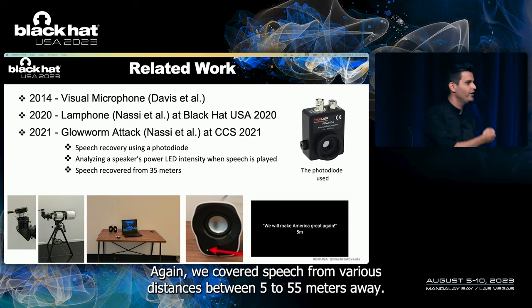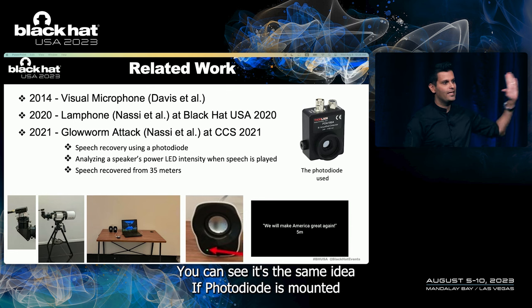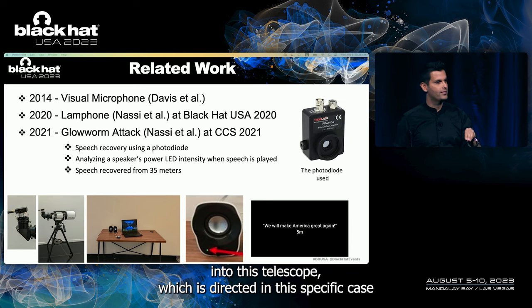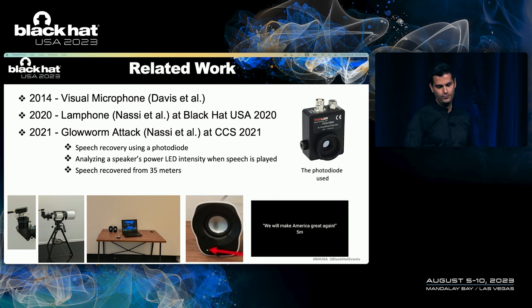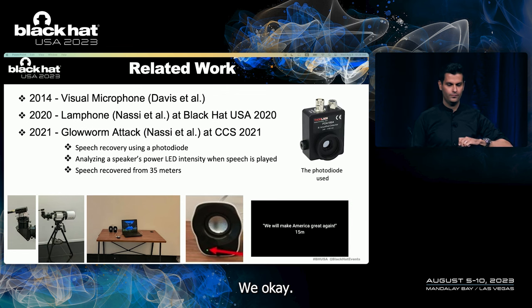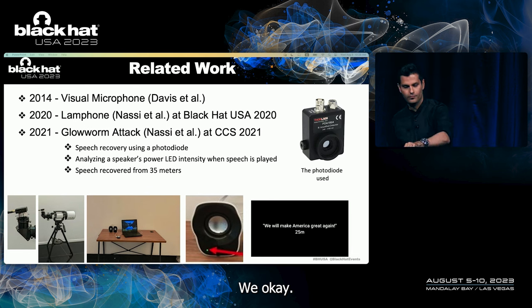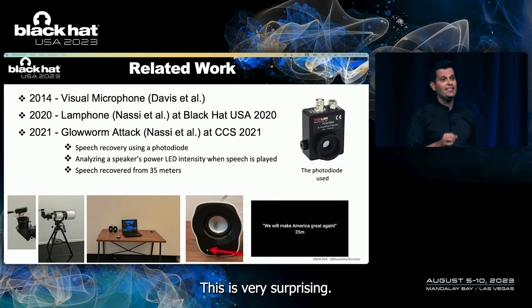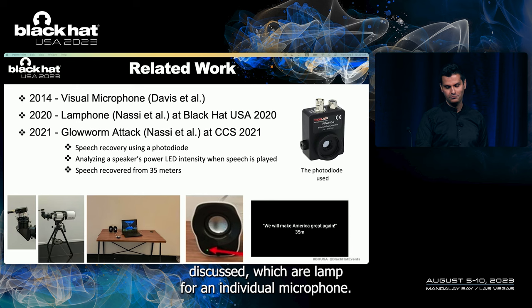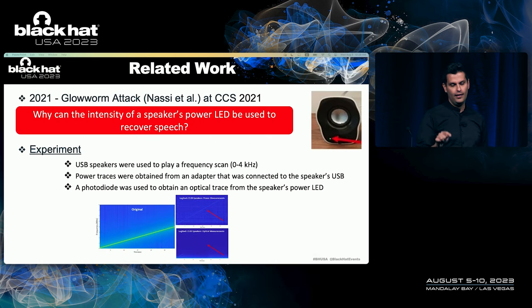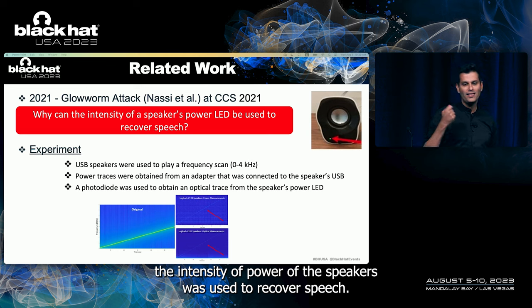We conducted another research named the Glow Home attack, published at CCS 2021, where we demonstrated speech recovery by analyzing the intensity of the power LED of USB speakers, and recovered the speech that was played by those speakers. We recovered speech from various distances between 5 to 35 meters away. A photodiode was mounted into a telescope directed at the power LED of the speakers. This was very surprising even with respect to the previous studies — Lamp Phone and Visual Microphone — because in this case, the intensity of a speaker's power LED was used to recover speech.